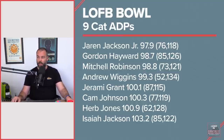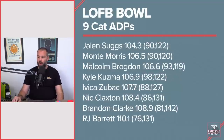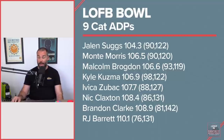Isaiah Jackson at 103.2 — I love that value there. His highest was 85 and the lowest was 122. Jalen Suggs was going at 104.3 — this was before the injury; we slide him way back. Monty Morris had a 90 to 120 range with an ADP of 107. Brogdon at 107 with a 93 to 119 range, and Kuzma at 107 with a 98 to 122 range — no wild ones there.